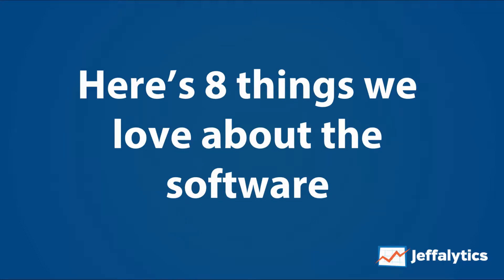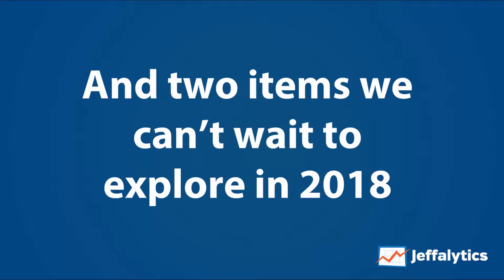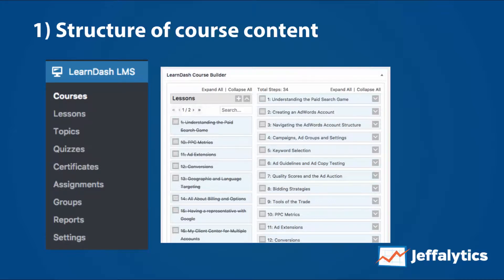I want to share eight things we love about LearnDash as software for our courses. Number one: the structure of course content. It's structured in a way that's so easy to understand. You have a course, you have lessons, you have topics, and within that you have quizzes, certificates, and assignments — basically all you need. It's a one-to-many relationship: one course that has many lessons, and one lesson that has many topics. You can drag and drop to control where things show up. We really like this hierarchical setup because it makes it easy to build an outline for a course and have it match exactly inside our learning management system.